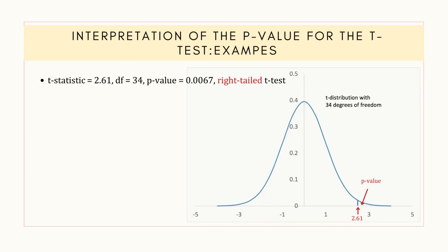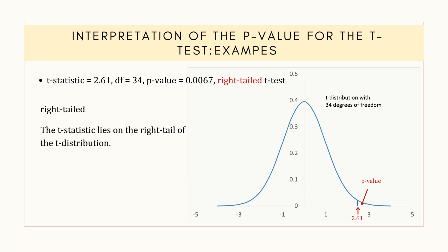Moving on to the second case. The hypothesis test is right-tailed. The t-statistic lies on the right tail of the t-distribution. The t-statistic follows a t-distribution with 34 degrees of freedom, and the p-value is 0.0067.